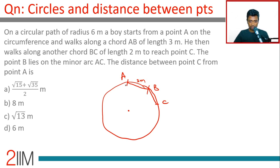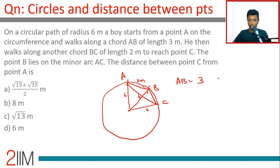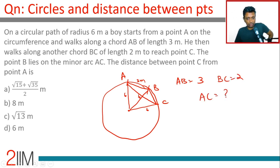The radii OA, OB, OC are all 6. AB is 3, BC is 2 — we need to find AC. That's what our question boils down to.